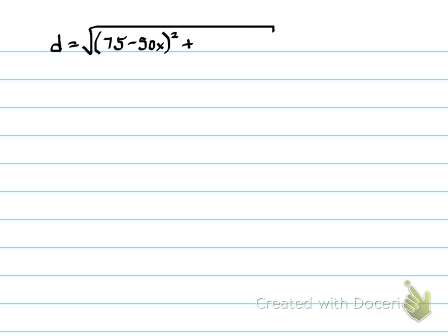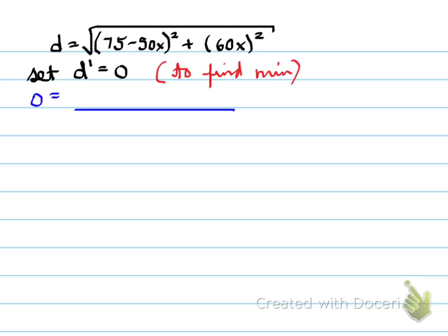We take the distance formula and set the derivative equal to 0 to find the minimum. Remember that a minimum or a maximum means that the derivative is equal to 0. And that's the point where the velocity is equal to 0, the object is at rest for that moment.